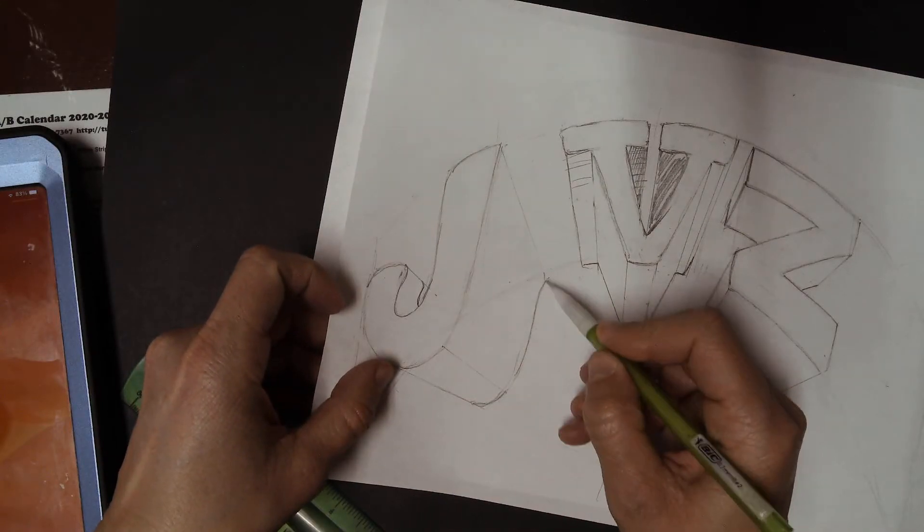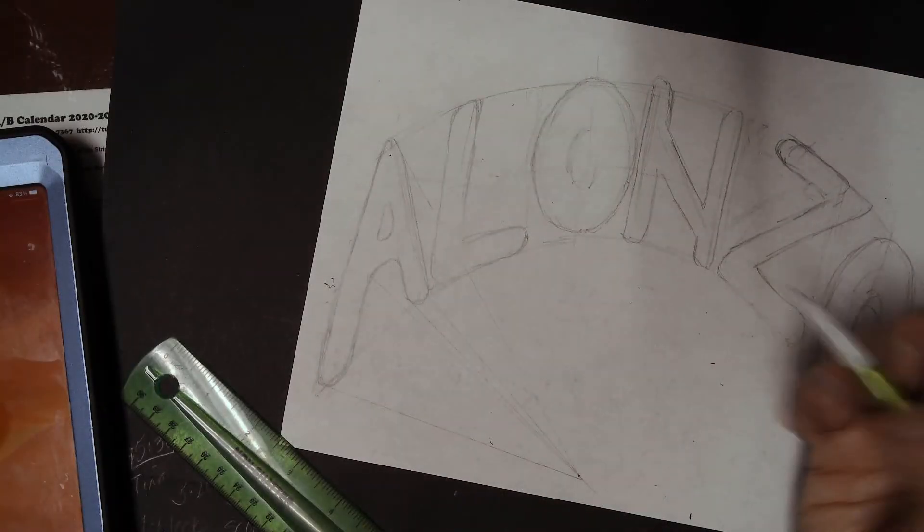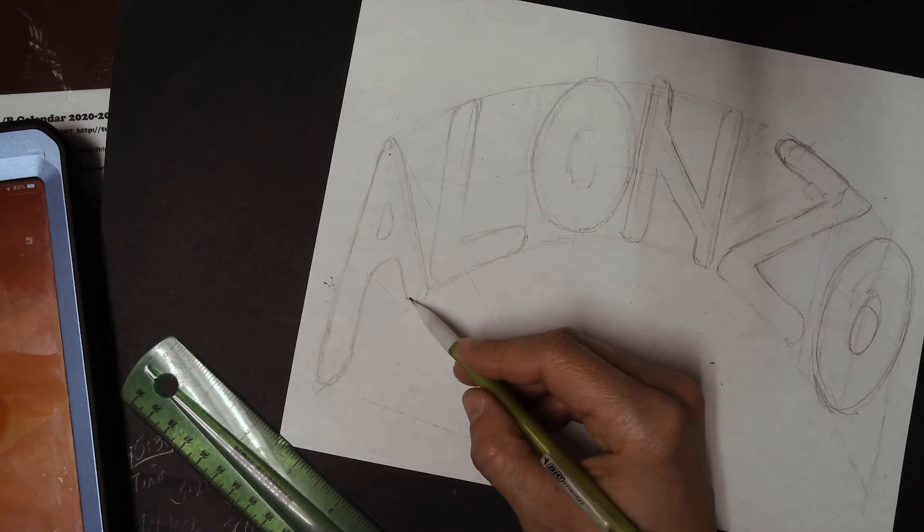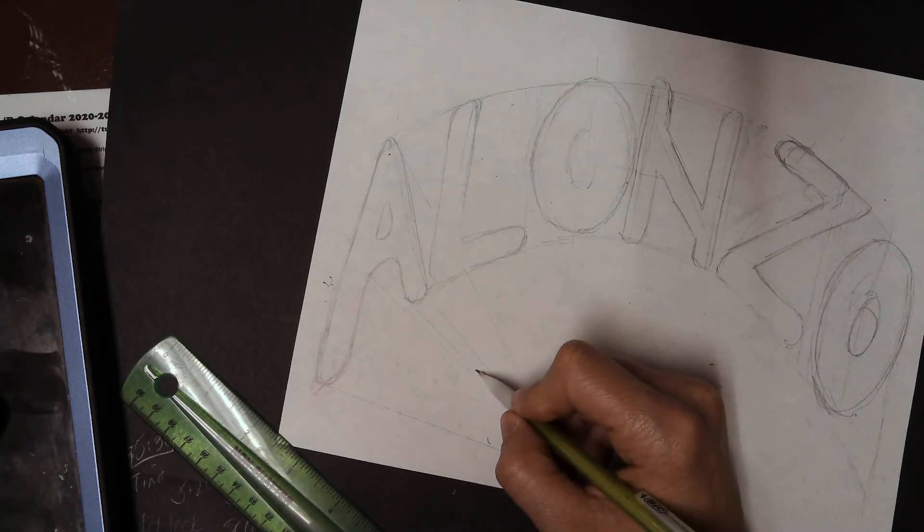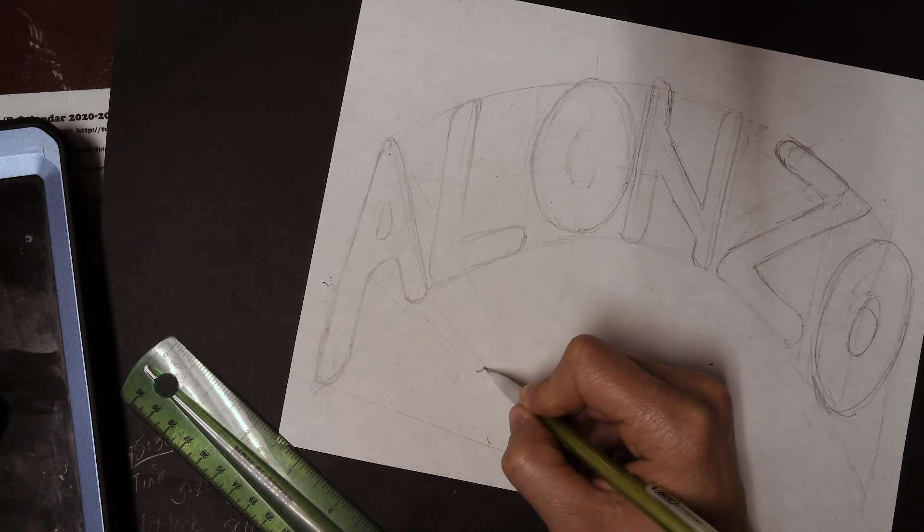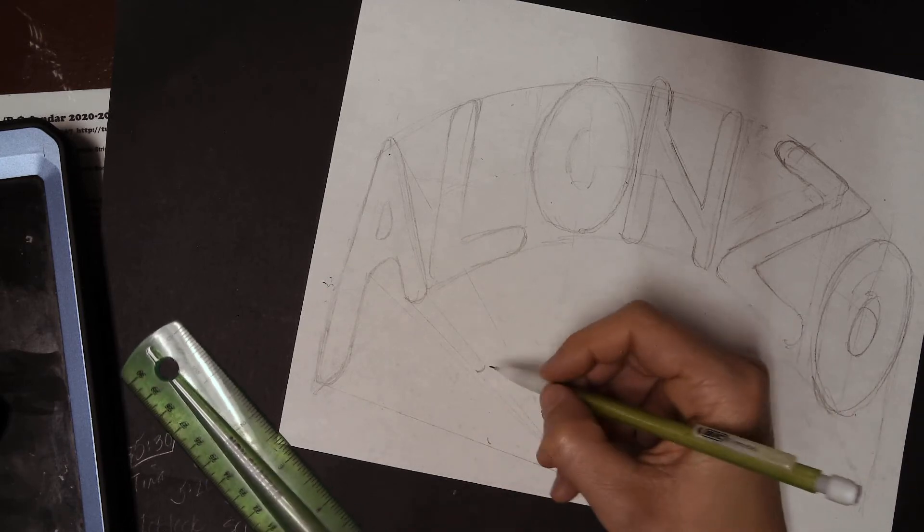And then you have to decide how much depth you want it to have. So, when I say depth, we're looking for a line that makes the three-dimensional illusion of the letter. So, for your A, Alonzo, what I'll do is I'll work from this leg right here. It doesn't really matter where you start, but that little curve right there looked like a fun spot to start, so that's why I did that.